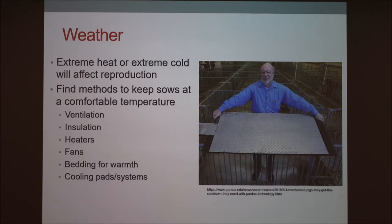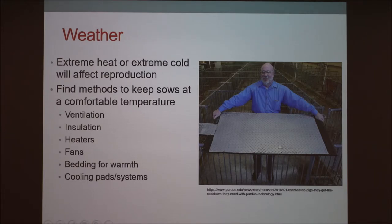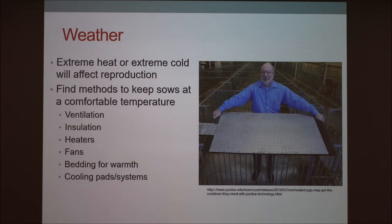If it gets too hot, it will affect reproduction. We had a really hot breeding season one September and our reproduction rate went down about 25%, and a lot of other producers we talked to went down about 25% as well. This picture is actually from Purdue University — in their animal science program, they created a cooling pad used in farrowing barns, because farrowing barns are heated to about 80 degrees. That's the opposite of what you want for a lactating sow. It becomes a heat stress issue, and this cooling pad has been working really well.